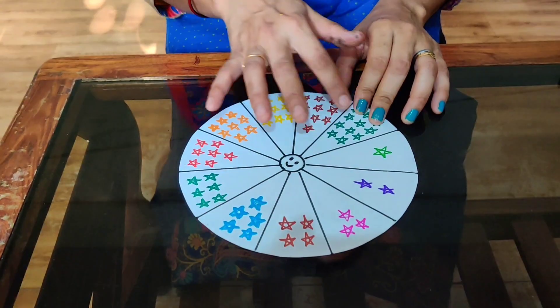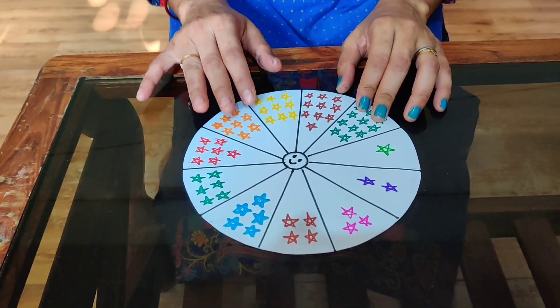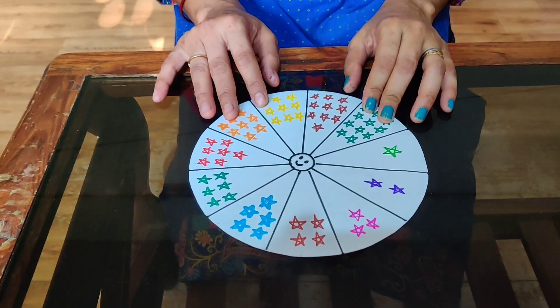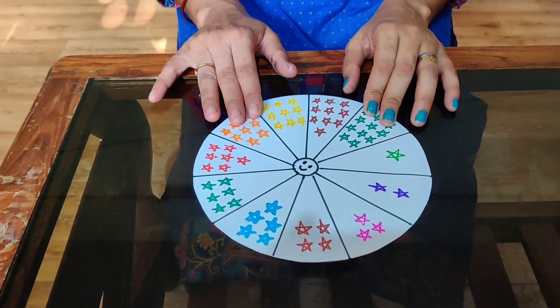Dear parents, kindly take a circular sheet and divide it into 10 to 11 parts. As you can see, I have done it.